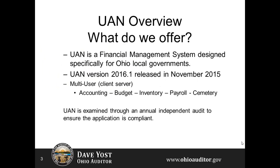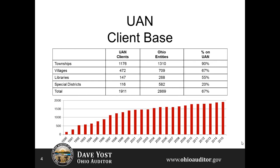So what do we offer? UAN is a financial management system designed for Ohio local government. The latest version is 2016.1. It is multi-user capable, audited annually to ensure compliance, and includes software such as accounting, budget, inventory, payroll, and cemetery. We have over 1,900 entities in UAN, and our growth is managed throughout the year so that we can both support our current clients and service new clients.